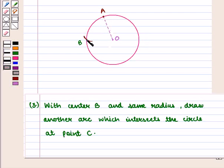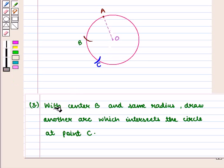Now, with center B and same radius equal to OA, we draw another arc which intersects the circle at point C.